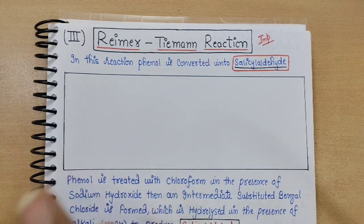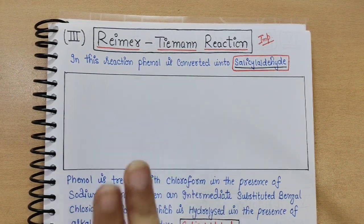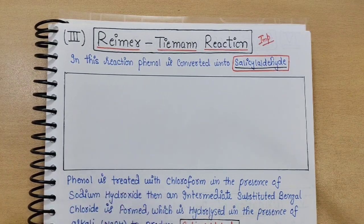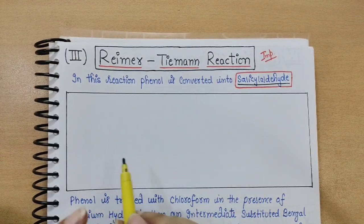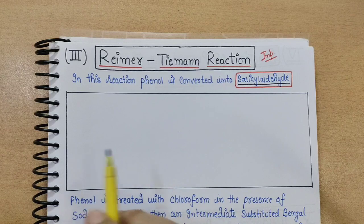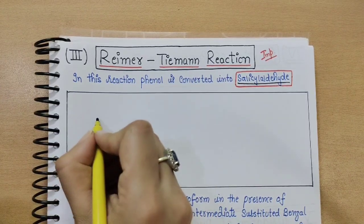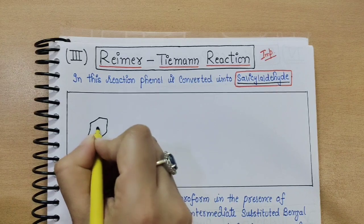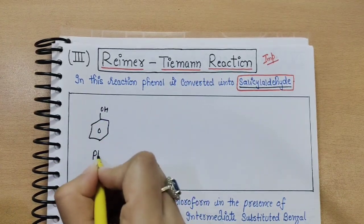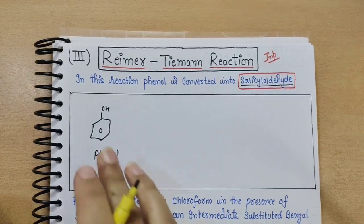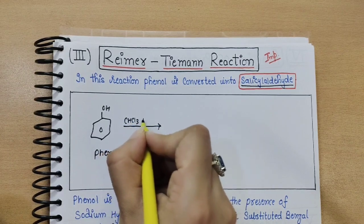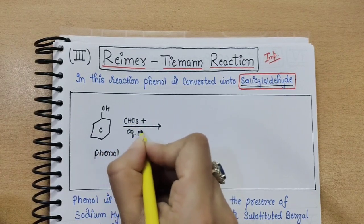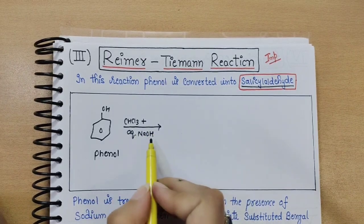These two reactions — the Kolbe reaction and the Reimer-Tiemann reaction — are very important named reactions of phenol. In the Reimer-Tiemann reaction, phenol reacts with chloroform (CHCl3) and aqueous NaOH.